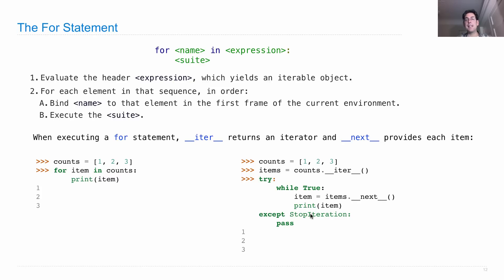And this keeps going until we see a stop iteration exception raised, at which point we do nothing. So we don't re-raise the exception. We don't print an error. All we do is pass.